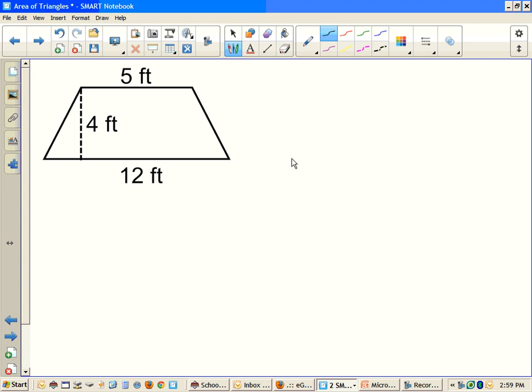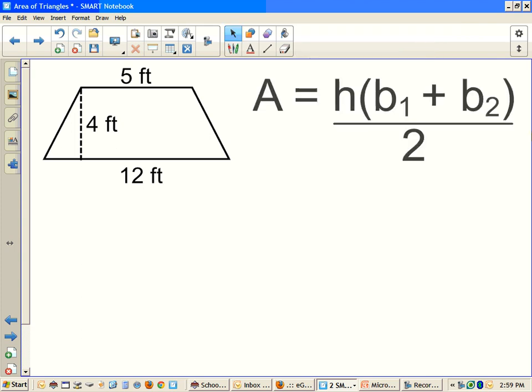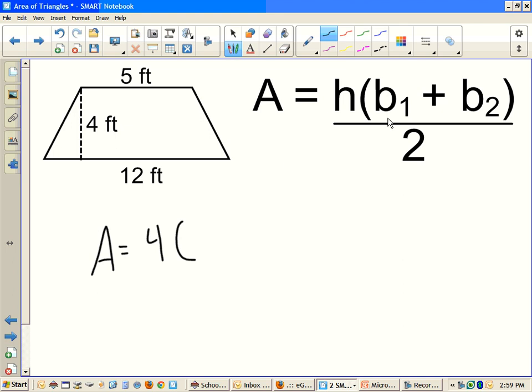So let's take another example real quick. We're going to use the formula this time. We know the height is 4 feet, so area is going to equal 4 times the quantity of base 1, here's my base 1, plus my base 2, plus 12, and I'm going to divide all that by 2.